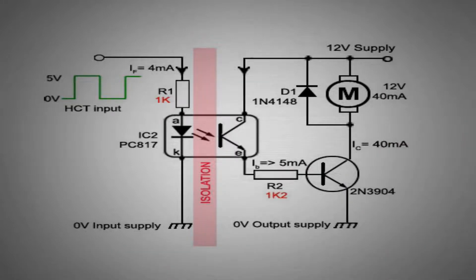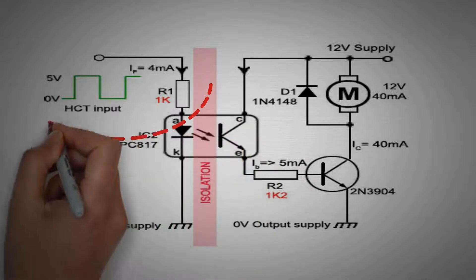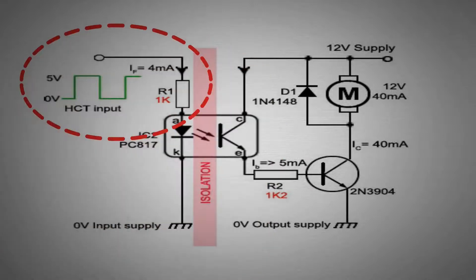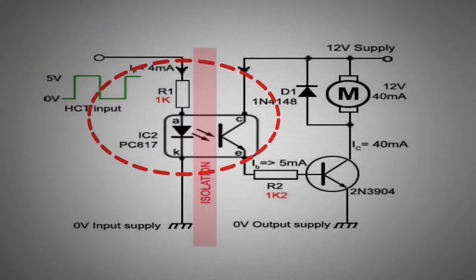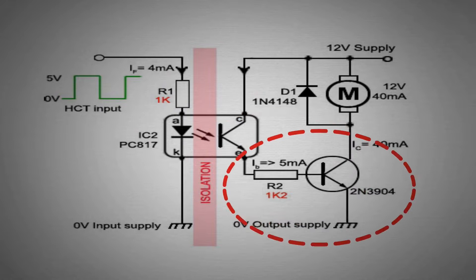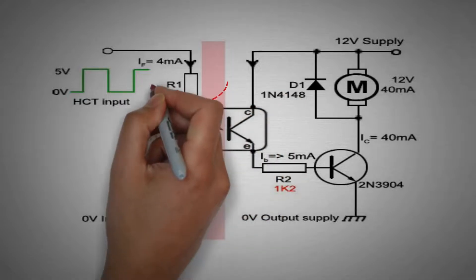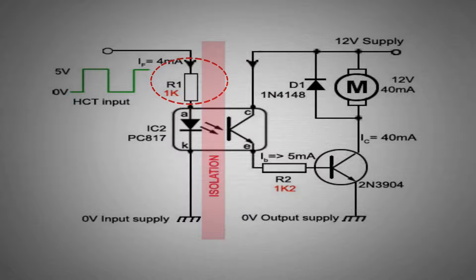As you can see in the figure the input of the opto-isolator is digitally driven by 5V digital logic of few mA, and at the output a 12V 40mA motor being driven by a transistor. Resistor R1 sets the current for IR-LED of opto-isolator and R2 sets the saturation base current for the drive transistor.